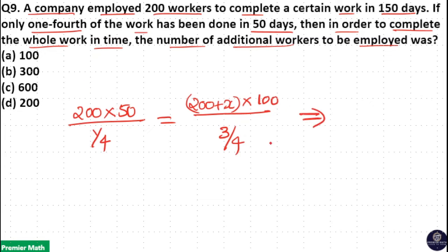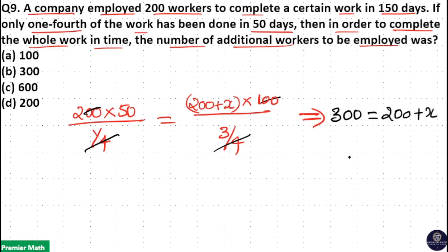This implies: 1 by 4 cancels, 2 into 50 is 100, 100 into 3 is 300. So 300 is equal to 200 plus x, where x is the additional number of employees. Therefore x equals 300 minus 200, which is 100. So option A is your answer.